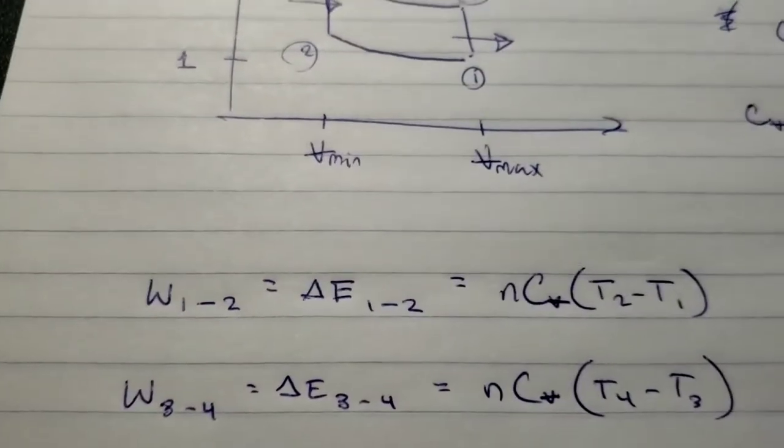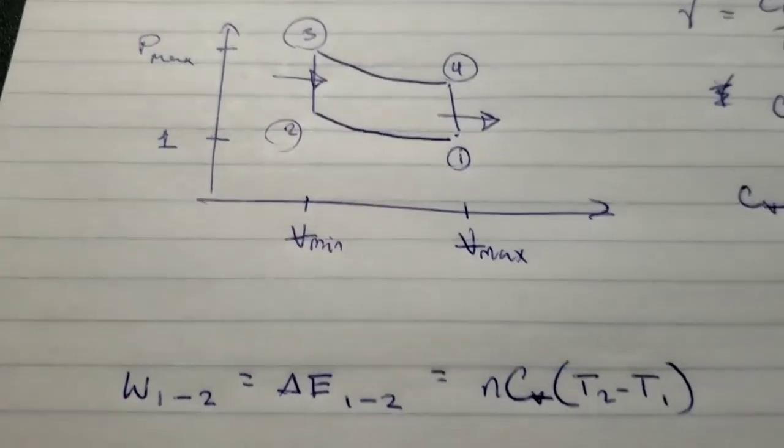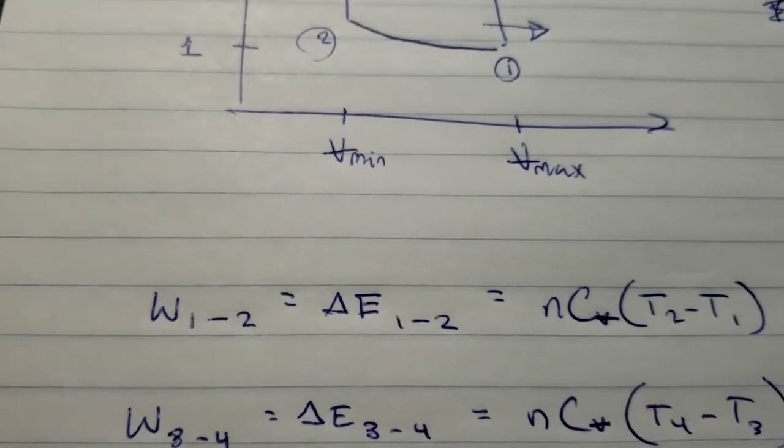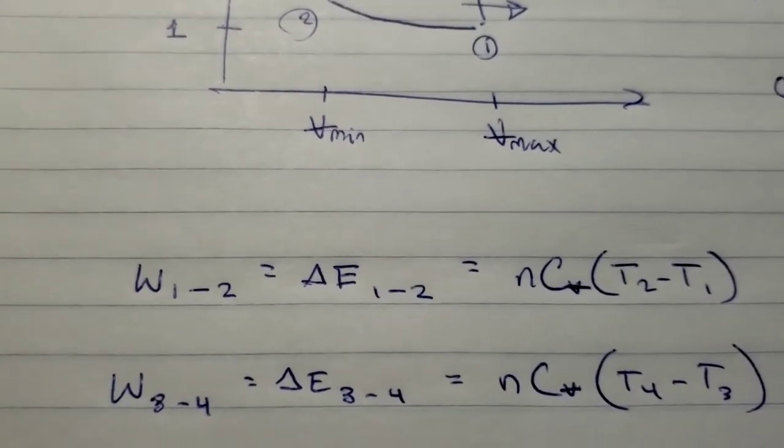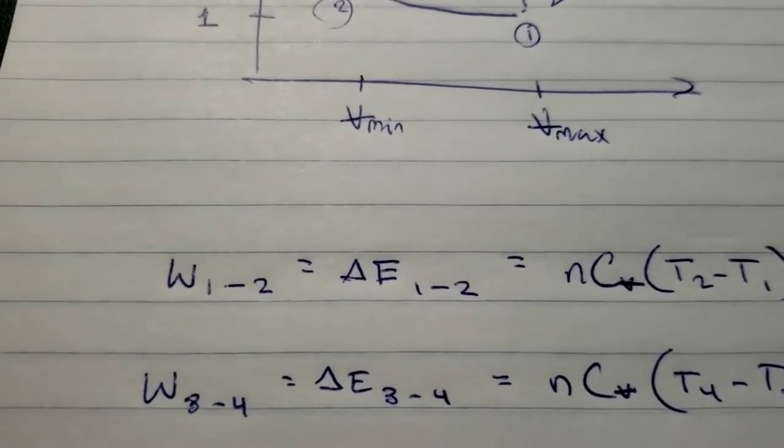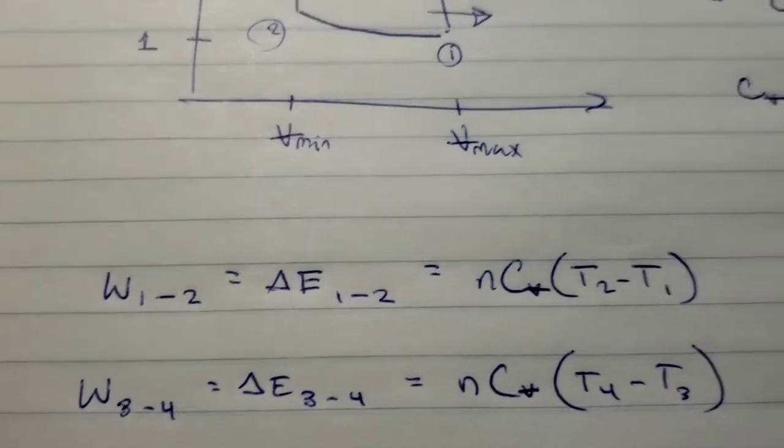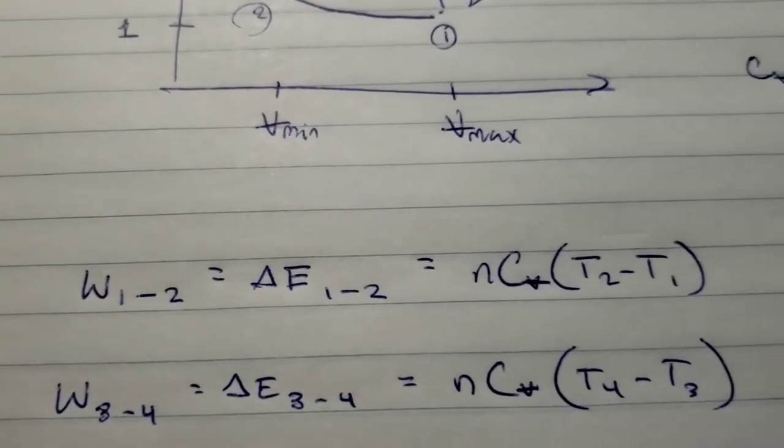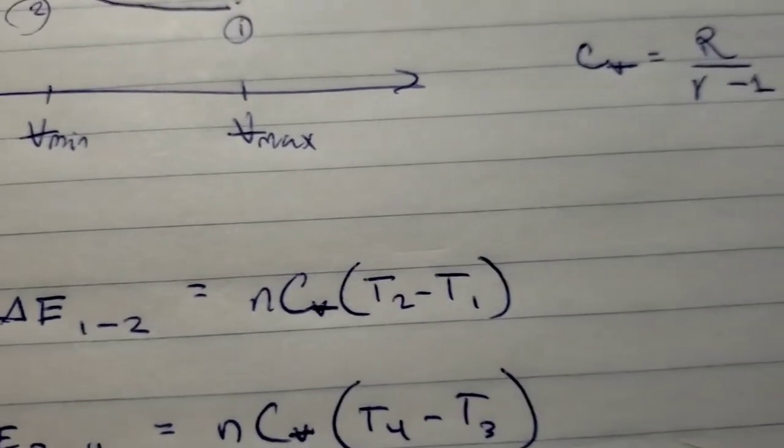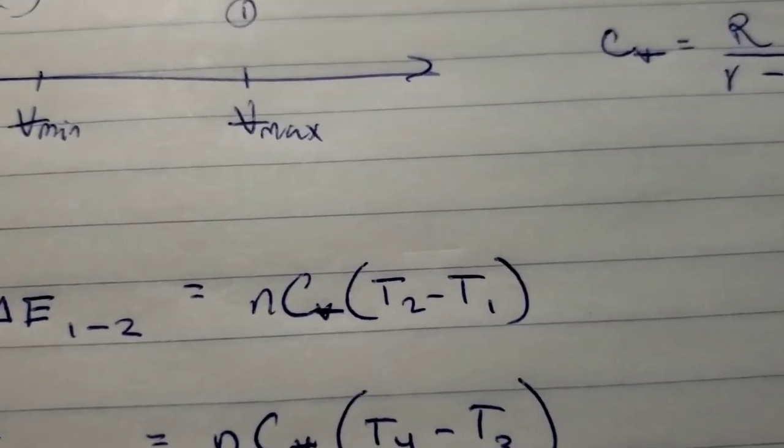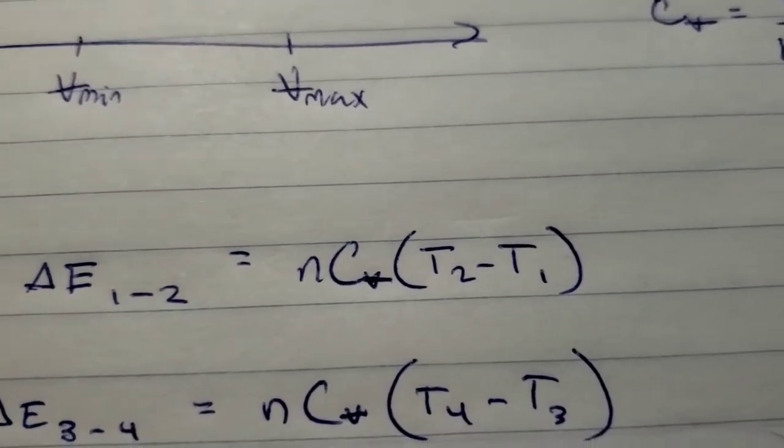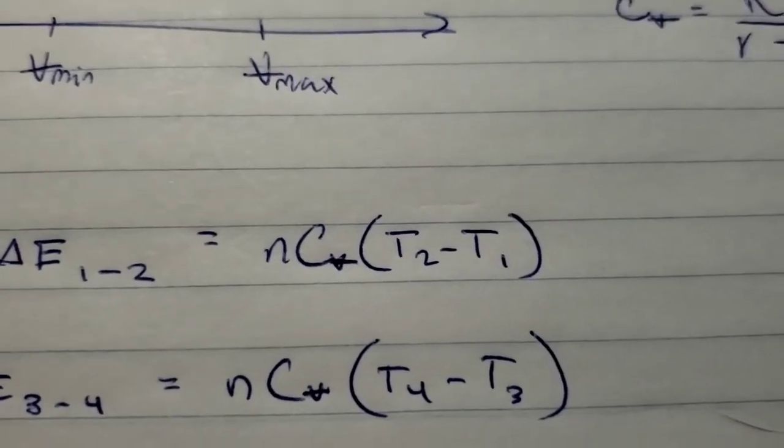We're going to break this down into the work done in each step. The work done from 1 to 2 equals the change in energy from 1 to 2, because the process happened so quickly that there was no heat transfer. The change in energy from 1 to 2 equals n times the specific heat at constant volume times the change in temperature from high to low.